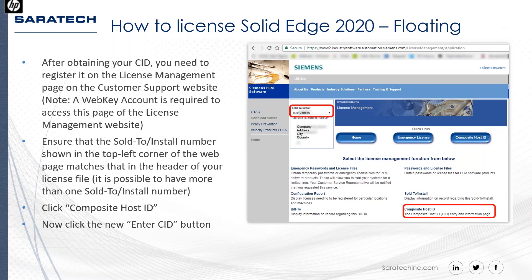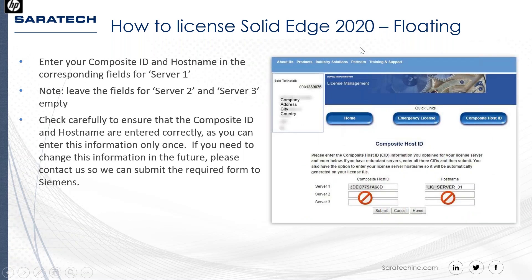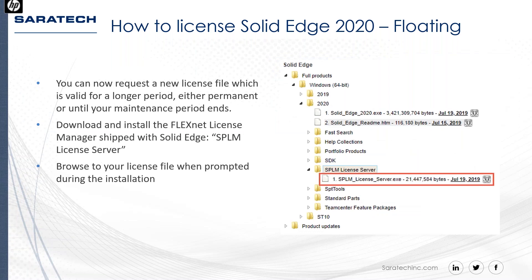You can copy and paste the CID from the command prompt or manually type it in. You'll see three server lines — that would be for a triad server setup, but most customers don't have that, so you only need to fill out the first line for Server 1. Simply paste in the CID — the Composite Host ID — and the host name of the license server. Both values come from the Get CID tool.